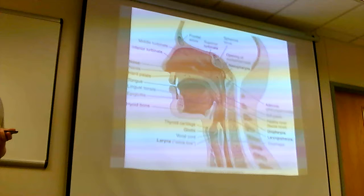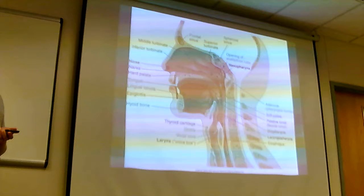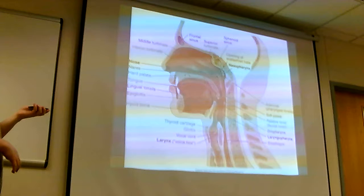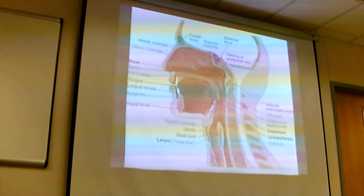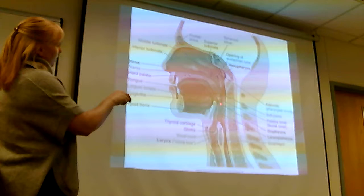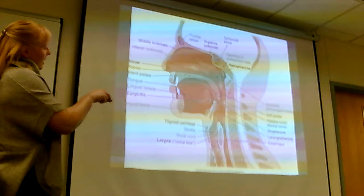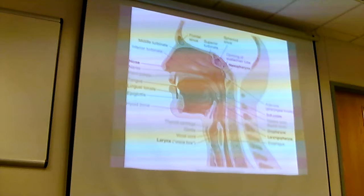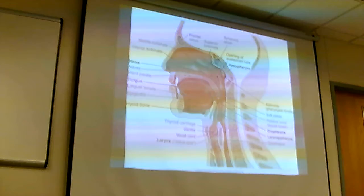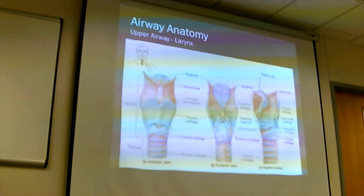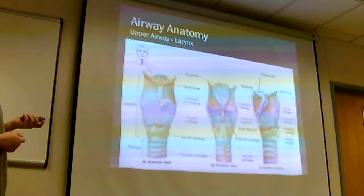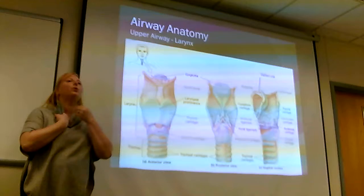The pharynx is also the location of a lot of muscular activity with coughing, swallowing, and the gag reflex. The larynx is right here — the structure that contains the voice box. It is the connection between the oropharynx and the trachea. Here's a picture of the larynx — this is your intubation anatomy and it's important to know. You've got anterior, posterior, and lateral cross-section views.